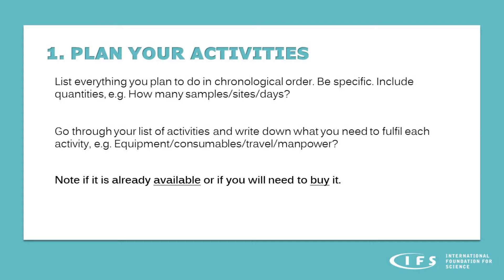Go through your list of activities and write down what you need for each. For example, do you need a piece of equipment to fulfill a certain activity, or consumables for another? Will you need to travel or pay for manpower? Again, be as specific as possible and include quantities. Make sure you write everything down that you need.